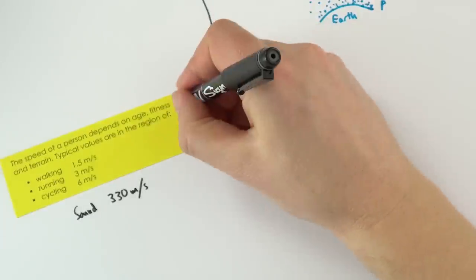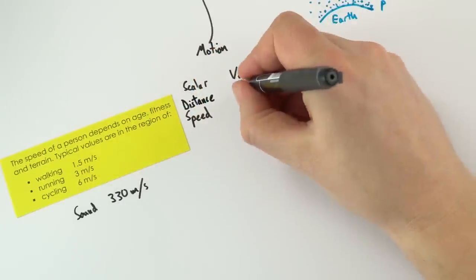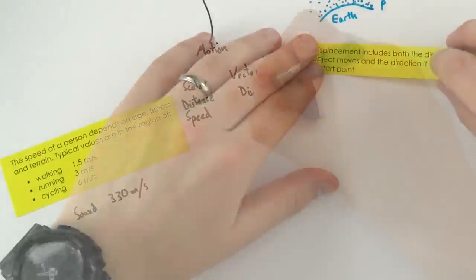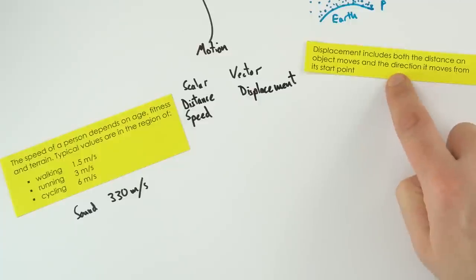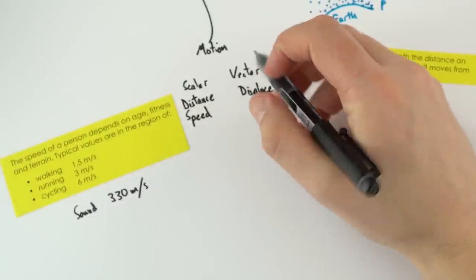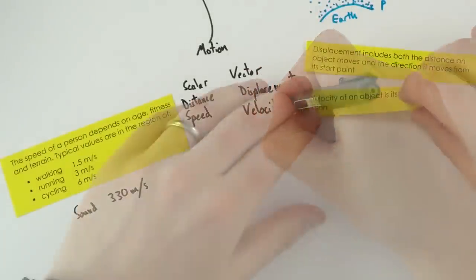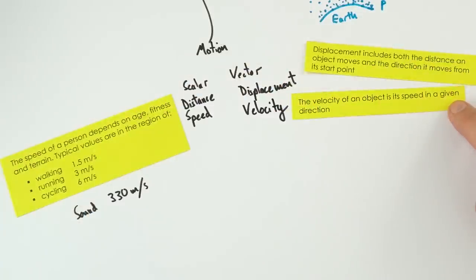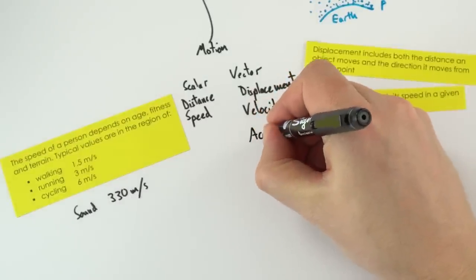Distance is a scalar quantity, but its vector equivalent is displacement — which includes not just how far something has moved but also the direction from its start point. Another vector quantity, similar to speed, is velocity, which we define at GCSE as the speed in a given direction. We can also look at how quickly velocity changes, which is acceleration.